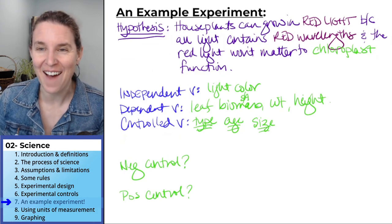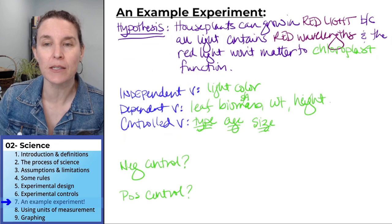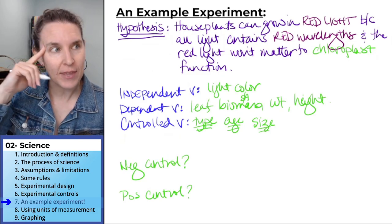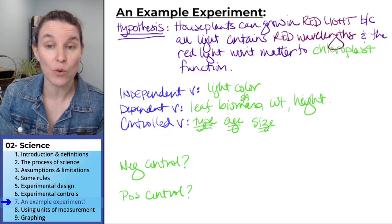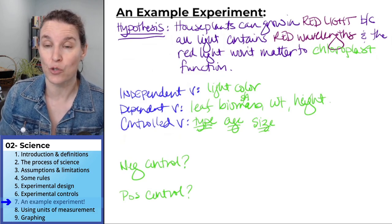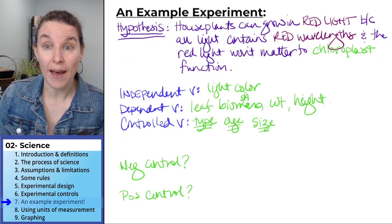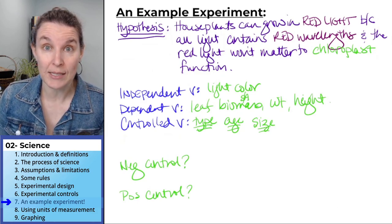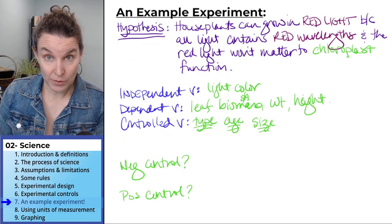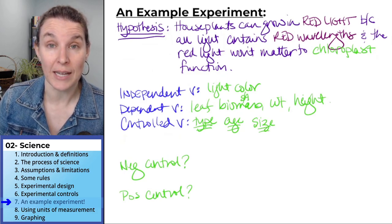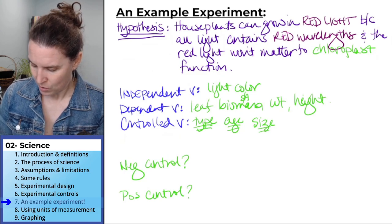Now, now is the part where we need to talk about our controls. And this is a really good example. Again, push pause and think about those controls because I think we have a good example of a way to have a negative control and a way to have a positive control. I already said that we should have a group of plants that have regular light. I would argue that a plant with regular light is going to be our positive control. Do you agree with that?